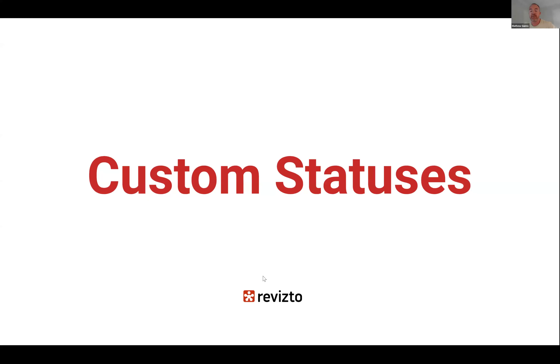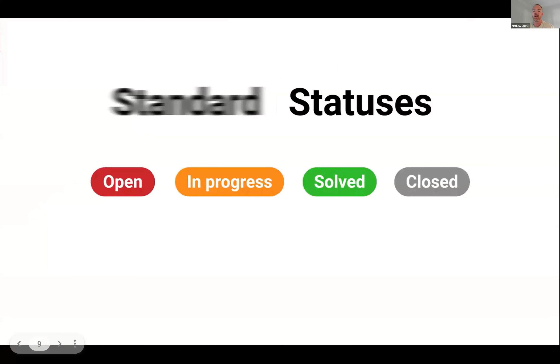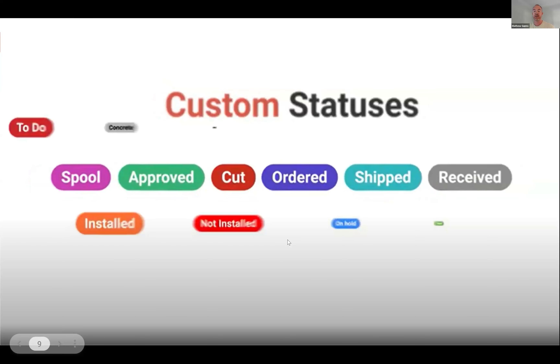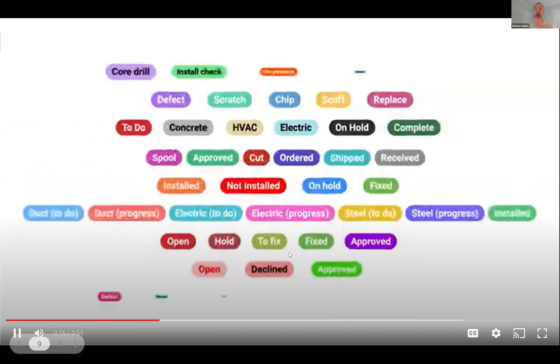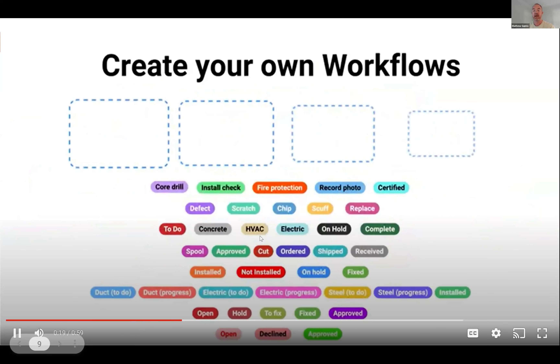Custom statuses is a new feature that's been brought on partly due to client engagement and feedback. We've had standard statuses for quite a while — open, in progress, solved, and closed — but when we look at large complex projects, that's not really going to fit perfectly. So we've built custom statuses, and we can now build our own workflows around different sorts of arrangements in the industry.